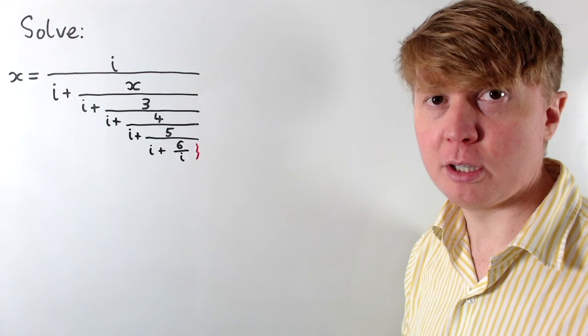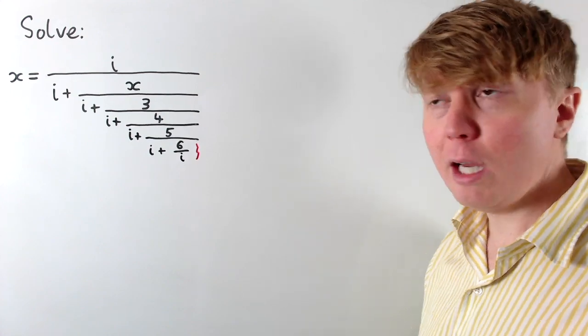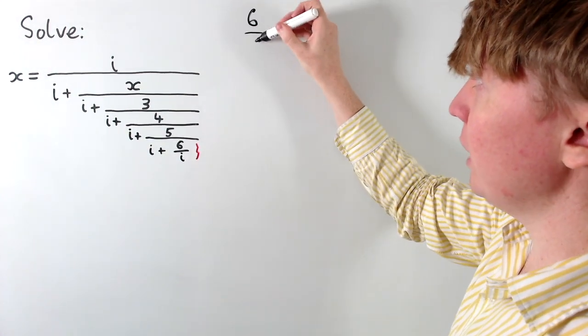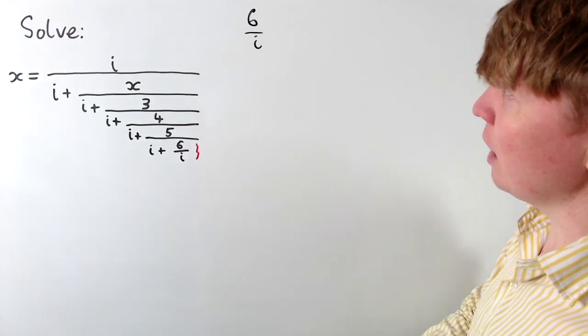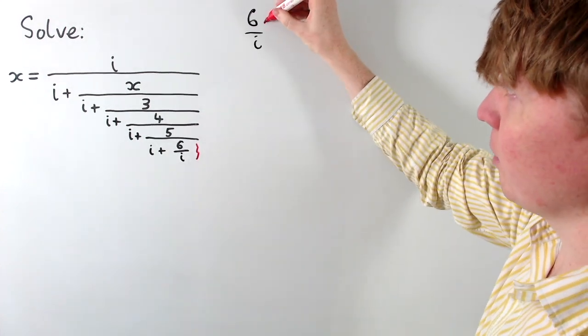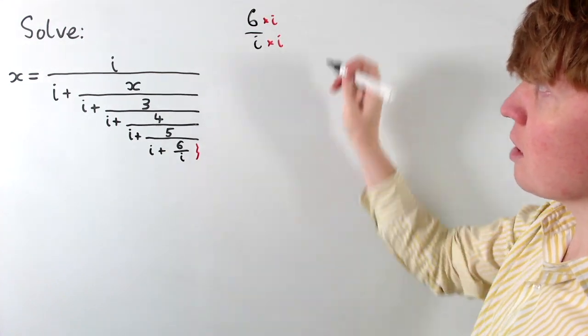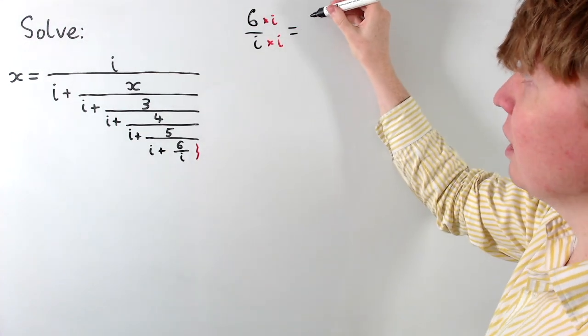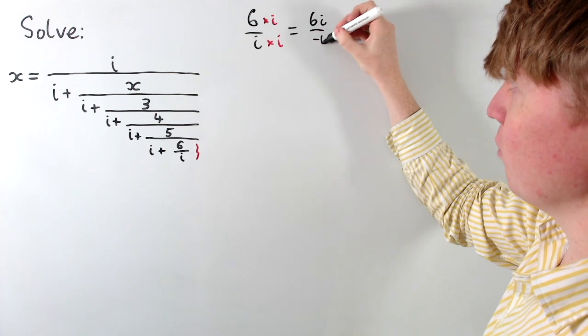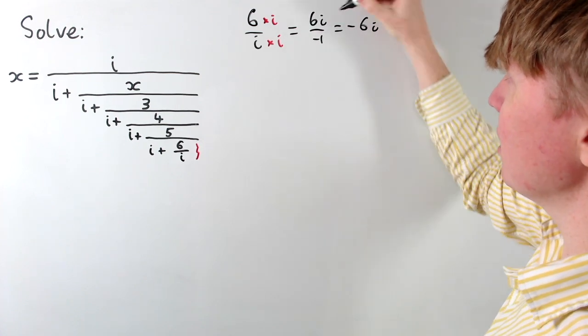Starting with just this first piece here, the i plus 6 over i. So if we have 6 over i, whenever we divide by i, we could imagine now taking this as a fraction and multiplying by i on the top and bottom, so we'd get in the numerator 6i, and the denominator i squared would give us a negative 1, so we get negative 6i.